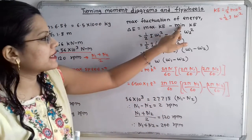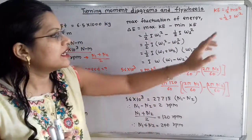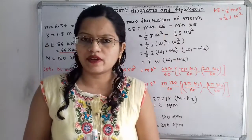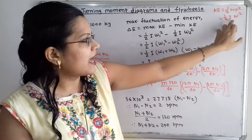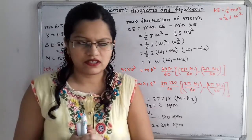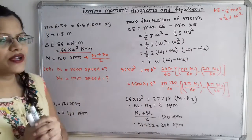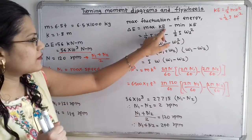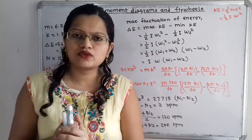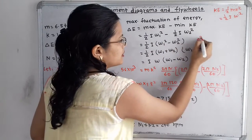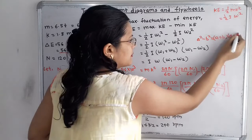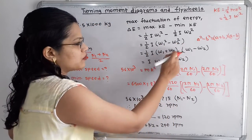For maximum and minimum kinetic energy, we use maximum angular velocity omega 1 and minimum angular velocity omega 2, since I — the mass moment of inertia of the flywheel — remains constant. So we write: half I omega 1 squared minus half I omega 2 squared. Taking half I as common, we get half I times (omega 1 squared minus omega 2 squared). Using the algebraic identity a squared minus b squared equals (a plus b)(a minus b), this becomes half I times (omega 1 plus omega 2)(omega 1 minus omega 2).